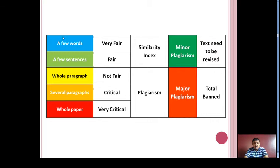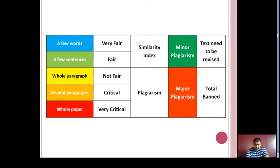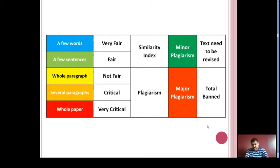For easy understanding, we have highlighted a table with color coding. A few words indicates a very fair similarity index, shown in blue, and is considered a minor type of plagiarism — in this case, we just need to revise the context. Whereas copying a whole paragraph, several paragraphs, or even the whole paper is not fair, critical, or very critical. Yellow, orange, and red colors indicate pure plagiarism and are categorized as major plagiarism, which should be totally banned. Plagiarism and similarity index are different terms, which we will see in module two.